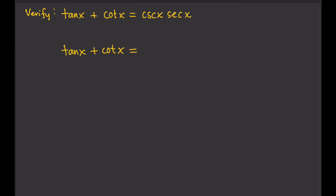The rule of thumb is to write everything in terms of sine and cosine. So that gives us: tangent x becomes sine x over cosine x, plus cotangent x becomes cosine x divided by sine x. Then we want to write this as a single fraction, so we find the LCD. The LCD is sine x cosine x.